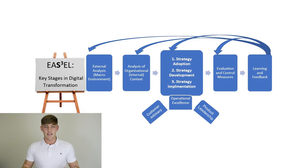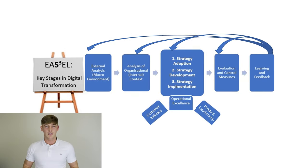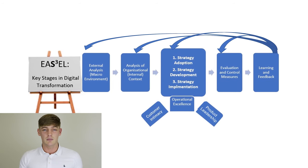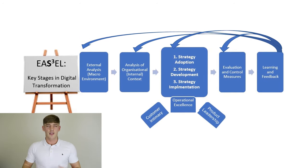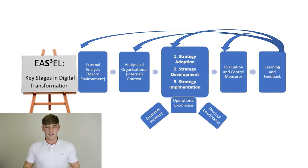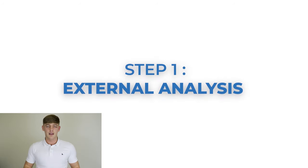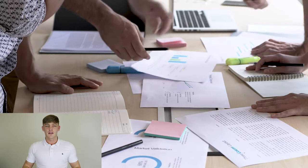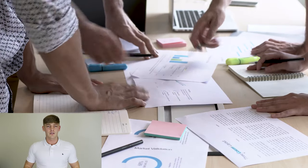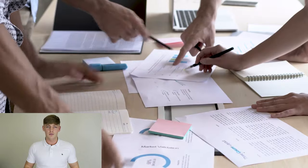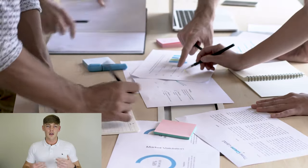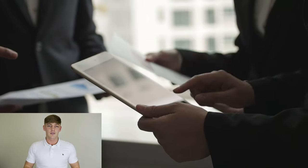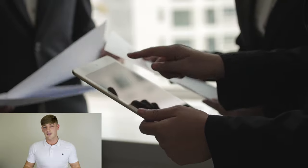This model is known as the Easel Conceptual Model, a simple five-step guide for organizational planning and strategy. The first step of the Easel Conceptual Model is known as the external analysis, and this is effectively looking at where you are now. You will want to scan the external environment, or the macro environment as it's known, to see what potential opportunities there are.